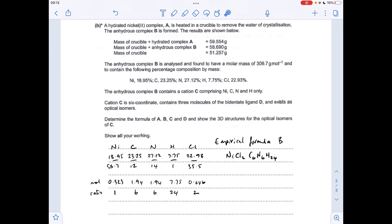So that gives an empirical formula of this. We just need to work out the MR of this and see how it compares with the MR of the actual complex. You can see the MR for the empirical is 309.7, so that means the molecular formula of B is NiCl2C6N6H24.